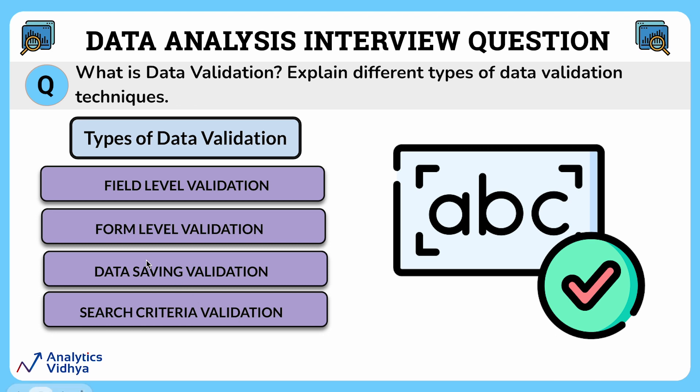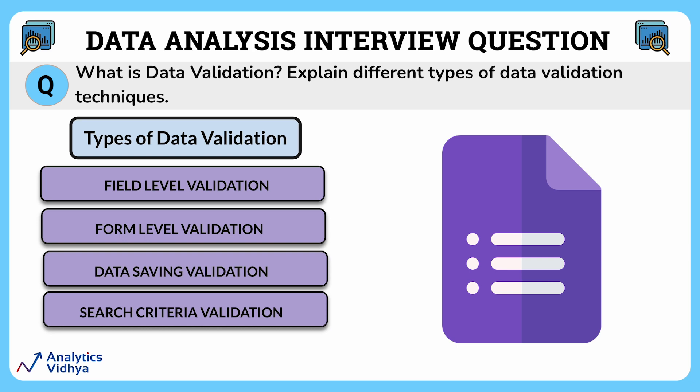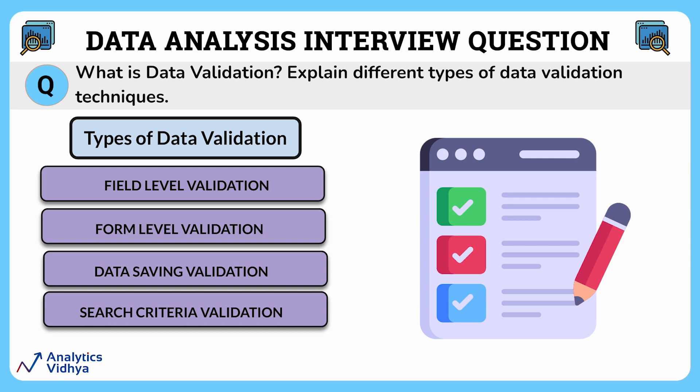Another type is form level validation. Form level validation is done when the user completes working with the form, but before the information is saved. A form typically refers to a structured input interface or document that collects and organizes data from users. Form level validation is like reviewing the whole form to make sure it's complete and makes sense before submitting it, like proofreading a job application.